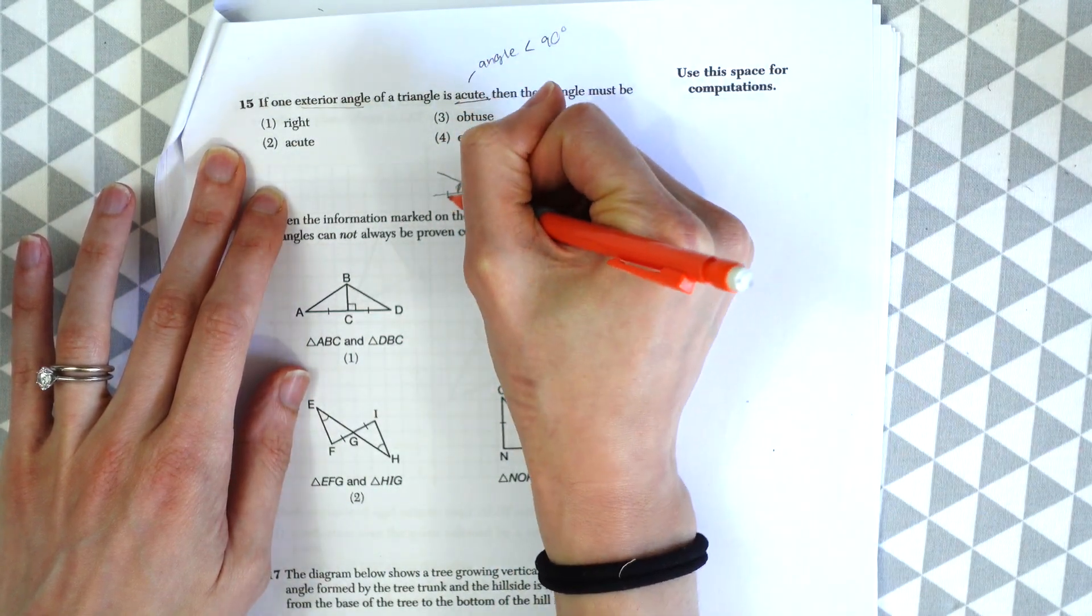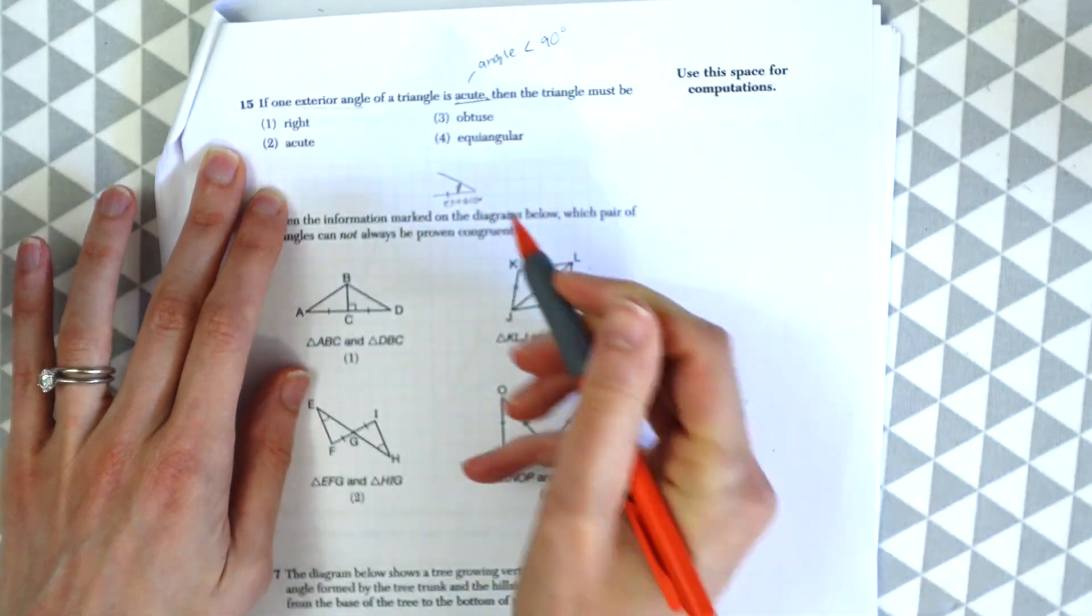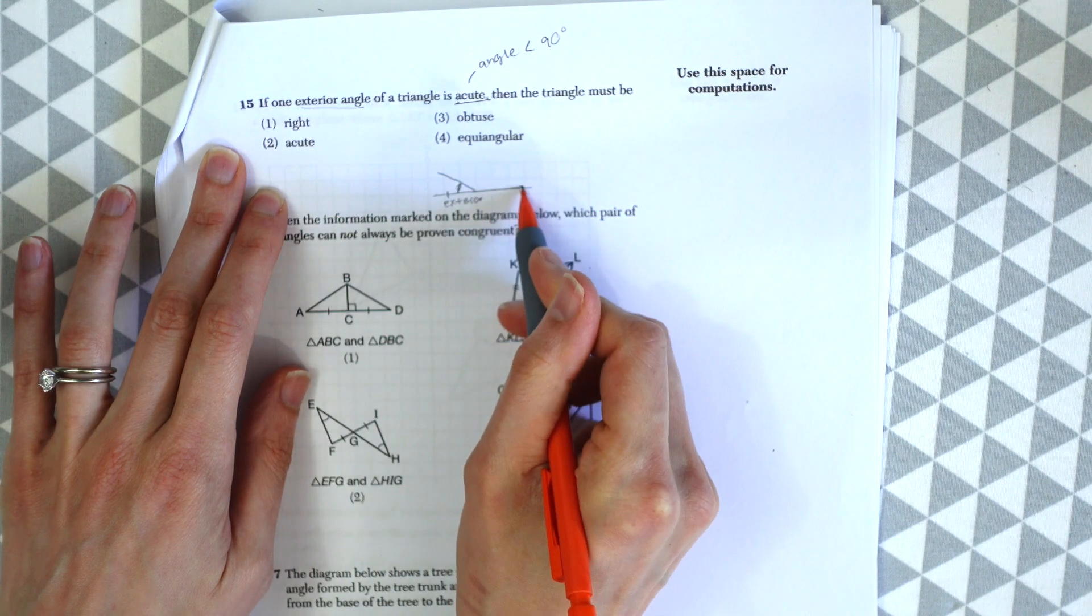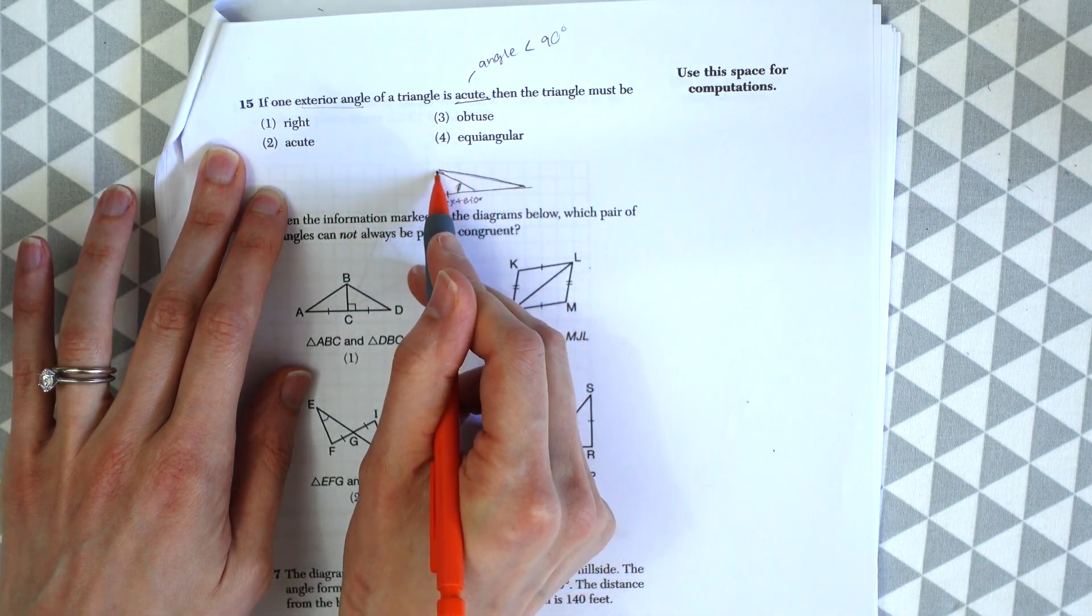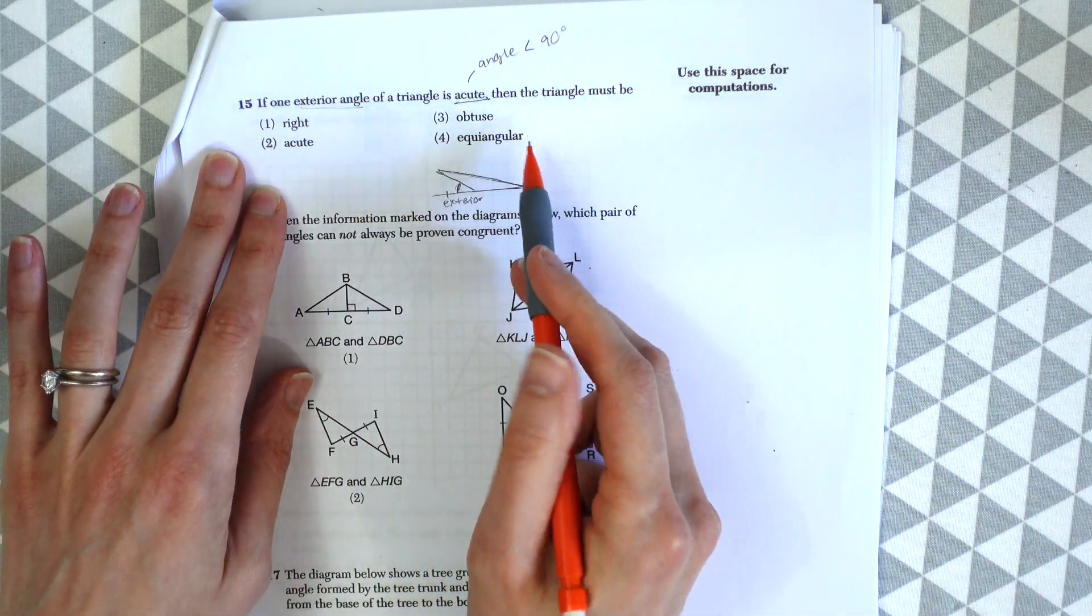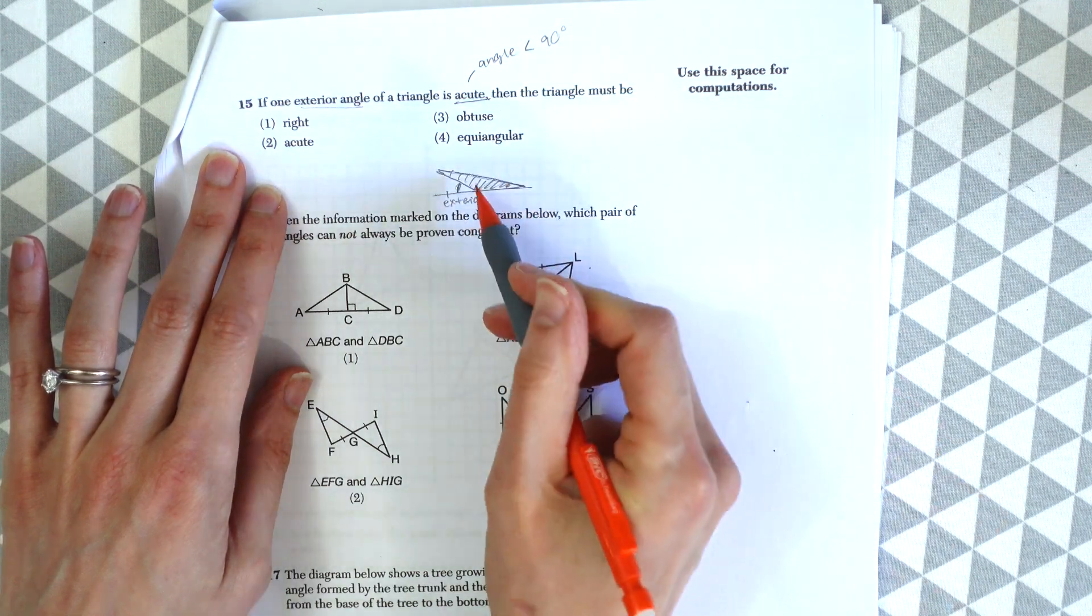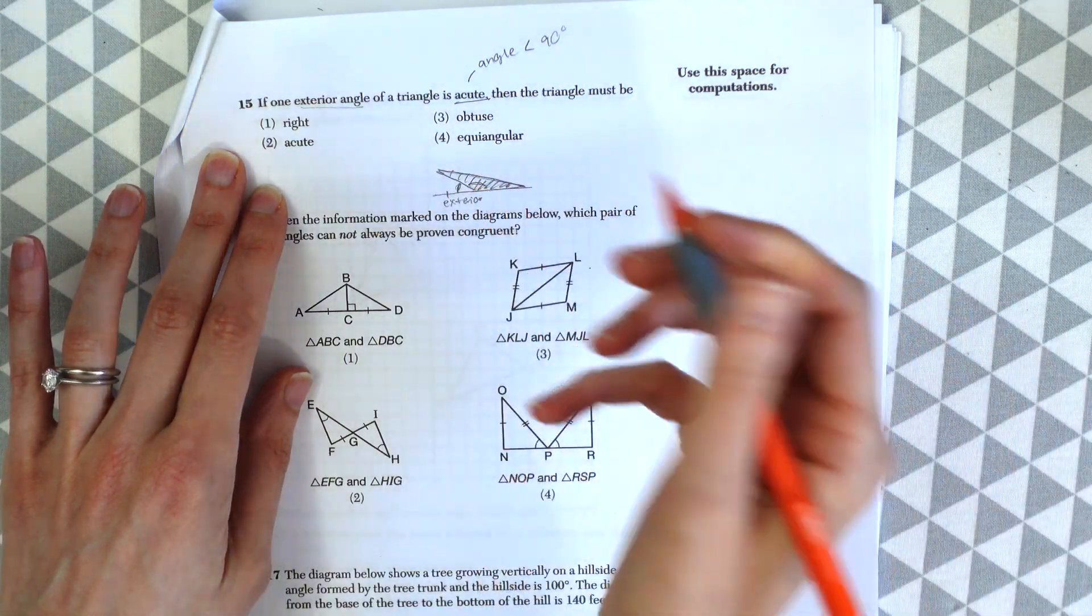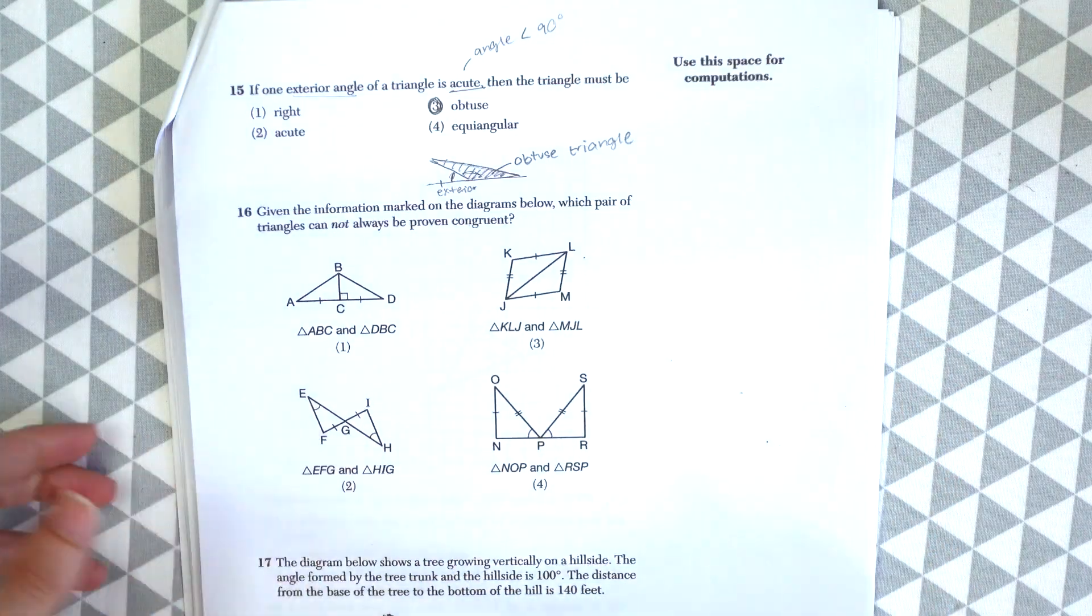Remember this is an exterior angle that they're saying, so that means the interior angles of the triangle, if we were to extend this line and connect them, it will look something like this. And then they want to know what kind of triangle this is here. And you can see that this angle is larger than 90 degrees, which is going to be an obtuse triangle. And that's our answer.